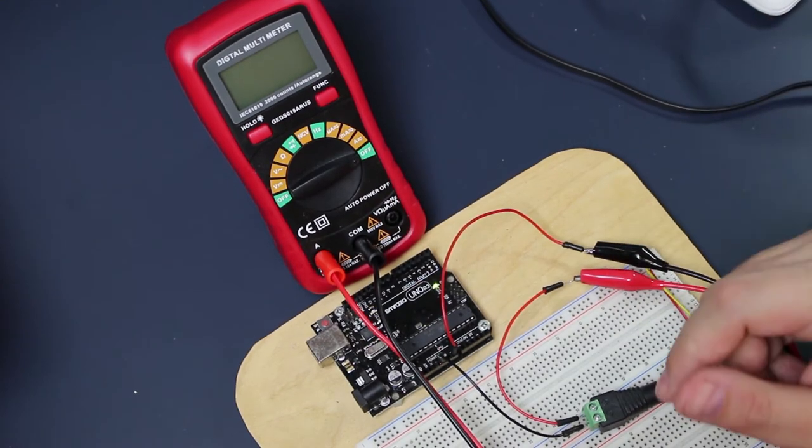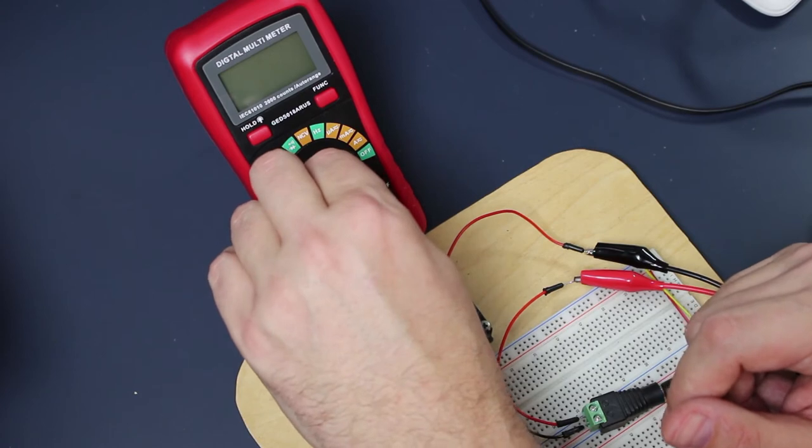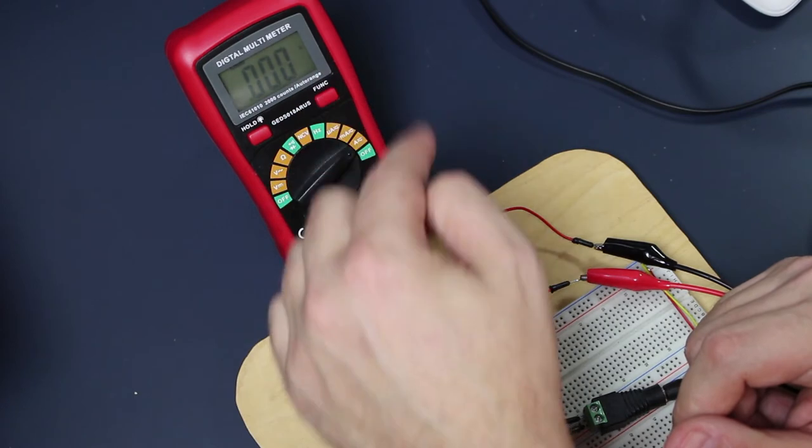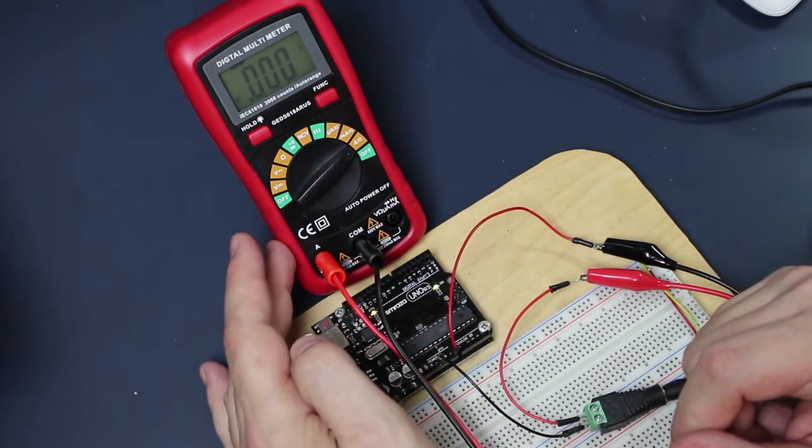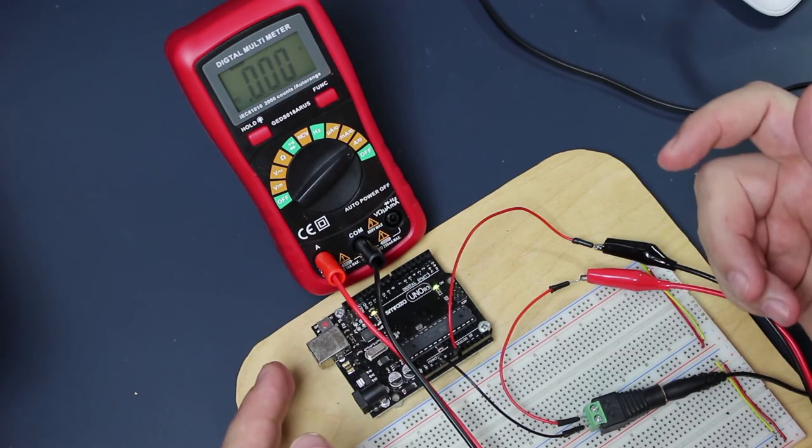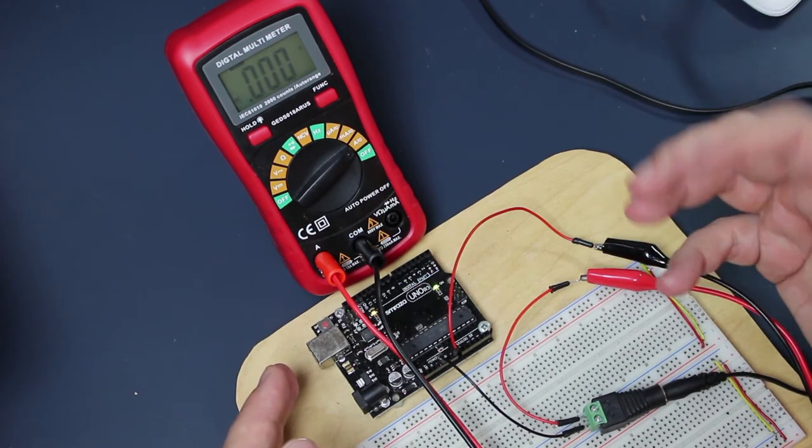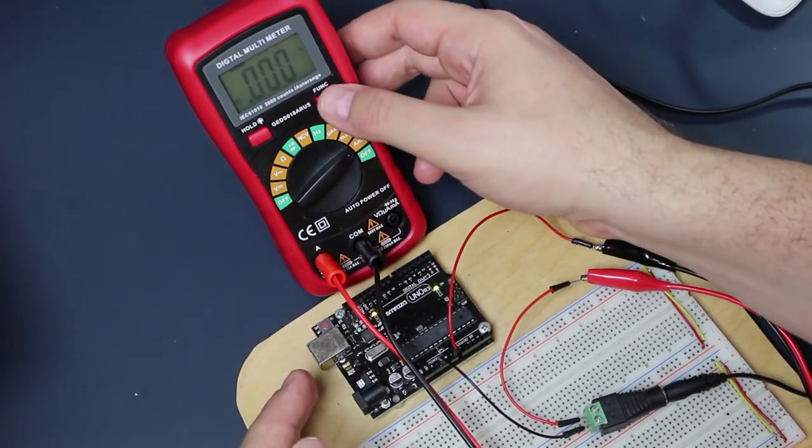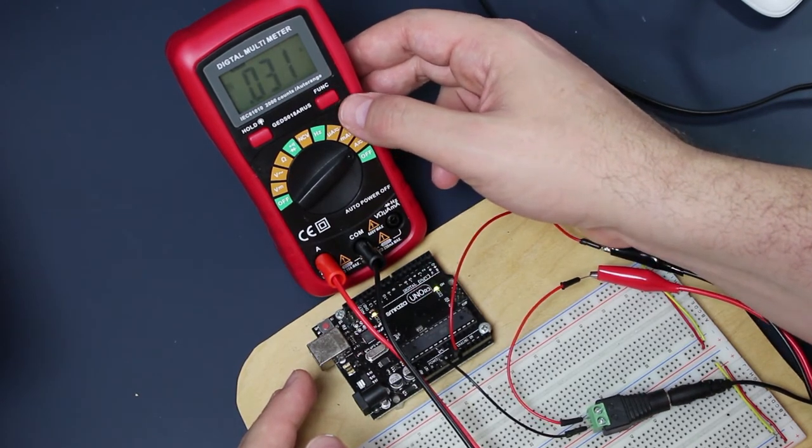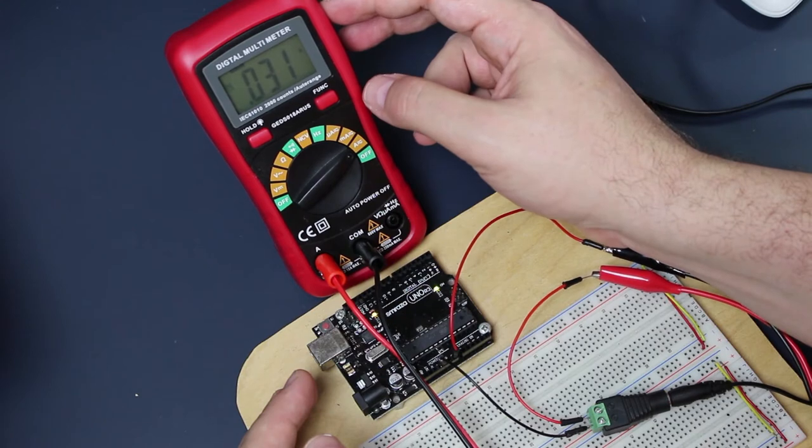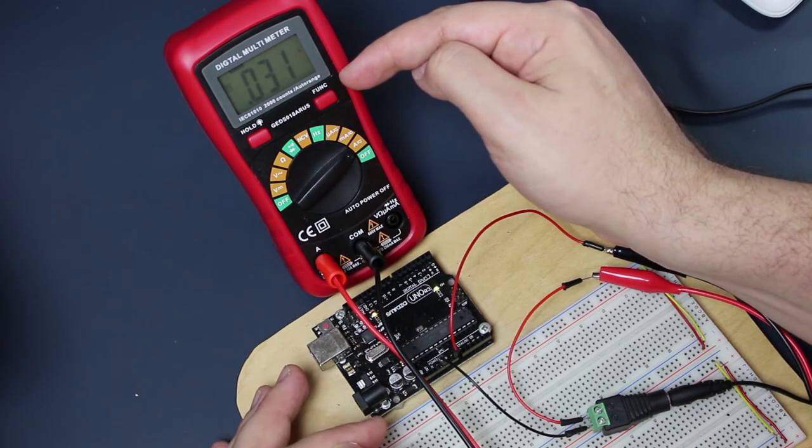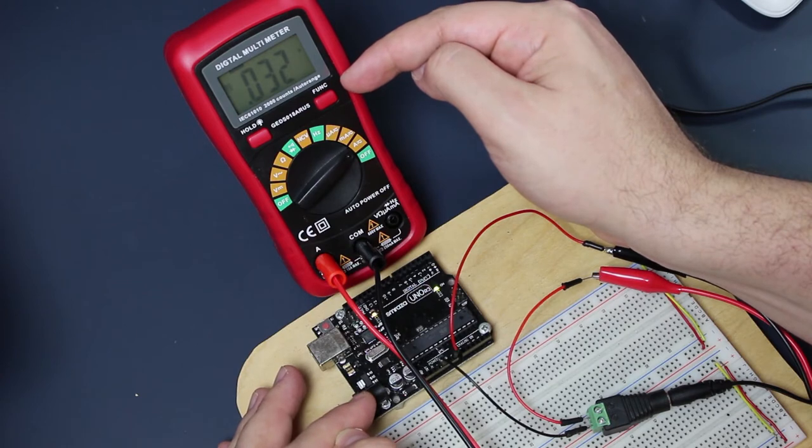So we want to measure the amperage or the current. So we put it on amp. Because this is an auto-sensing multimeter, what it does, it always goes first to alternate current. And it does not sense that it's not. And it has a function button for that. So yours might do the same. The moment I press the function button, now it's reading direct current.